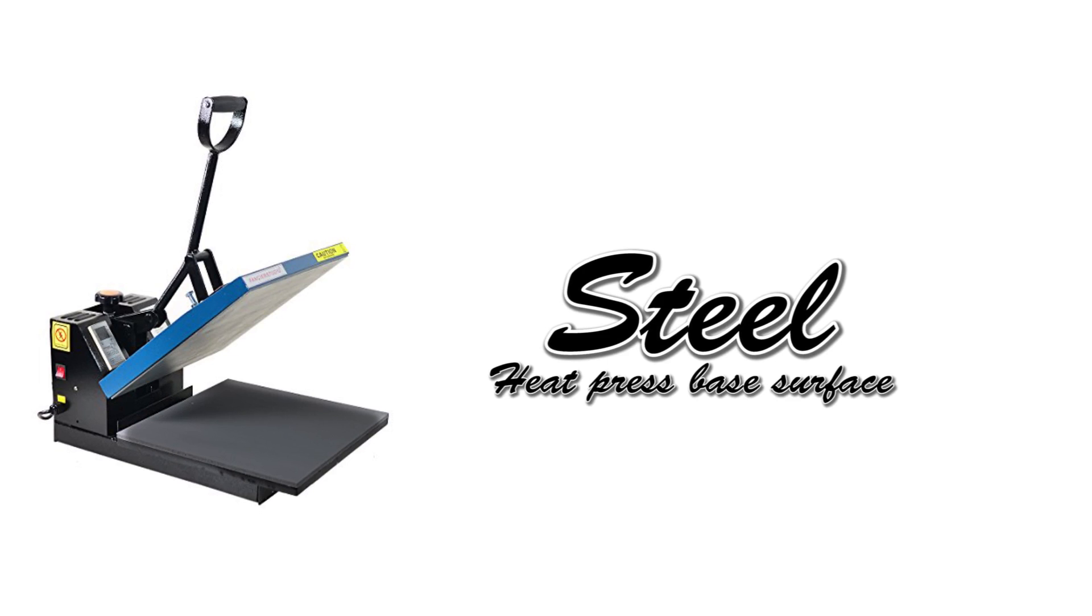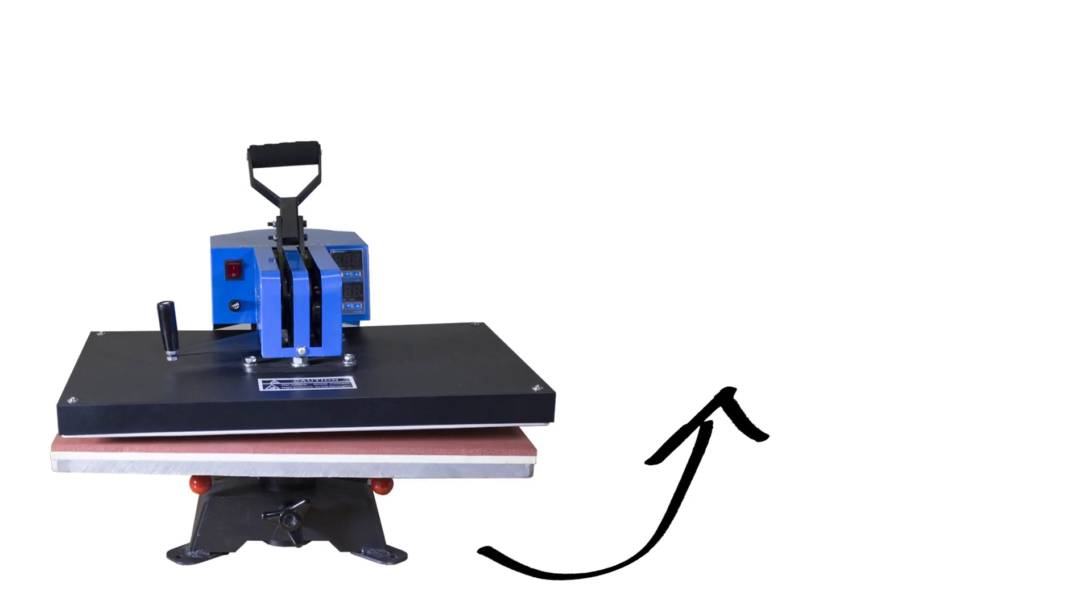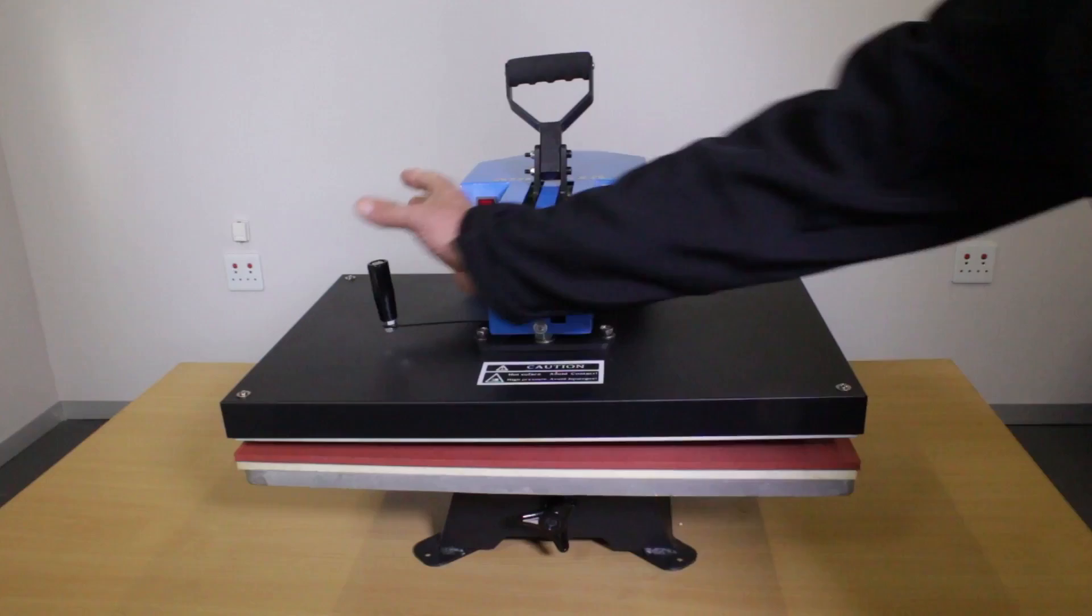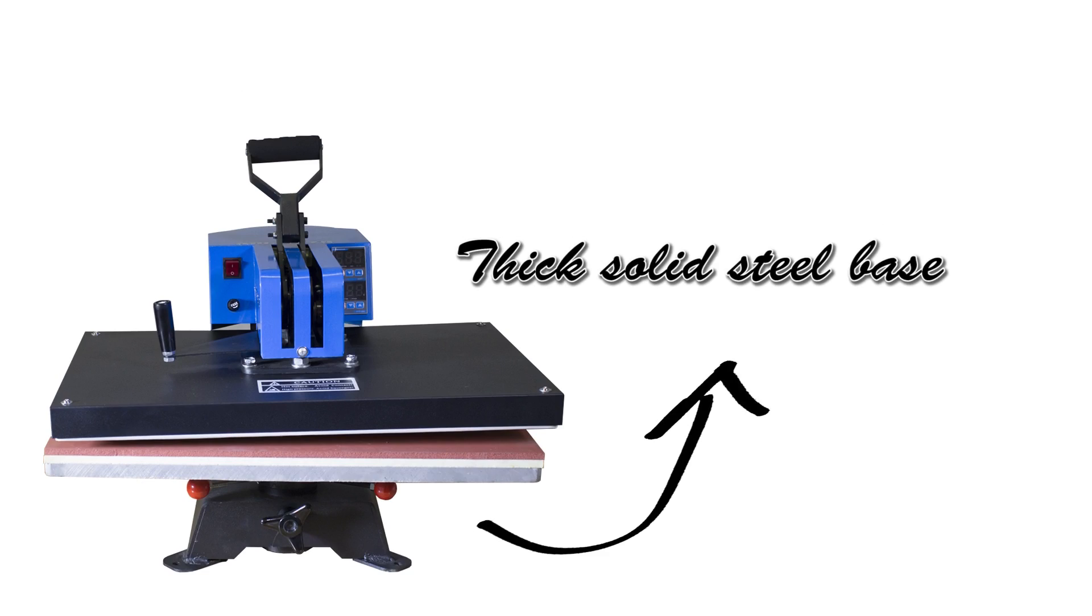Below the bottom surface is the steel base made of a solid thick plate, mainly to increase strength and weight. That's why even if you swing the top part to the back, the whole machine remains super stable.